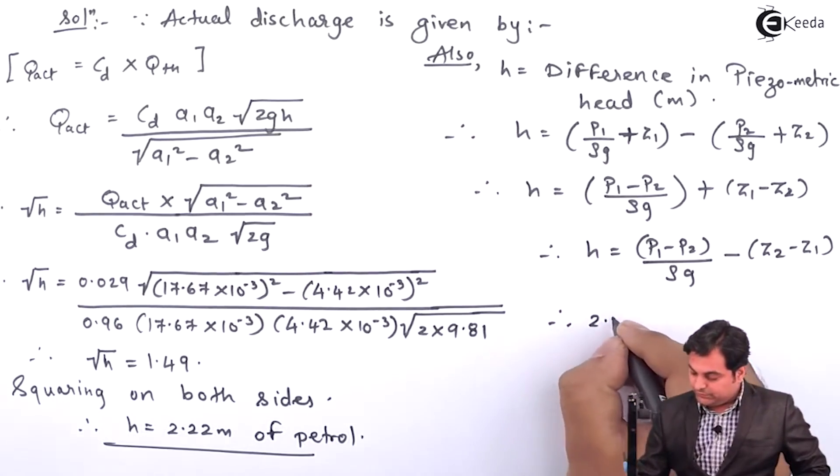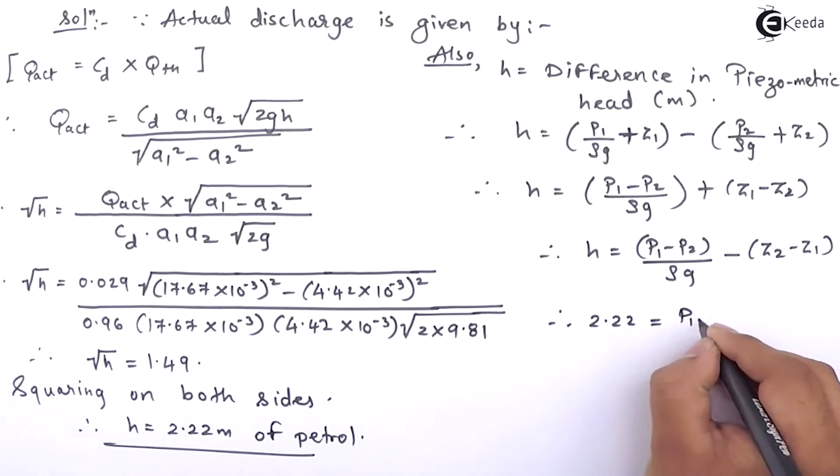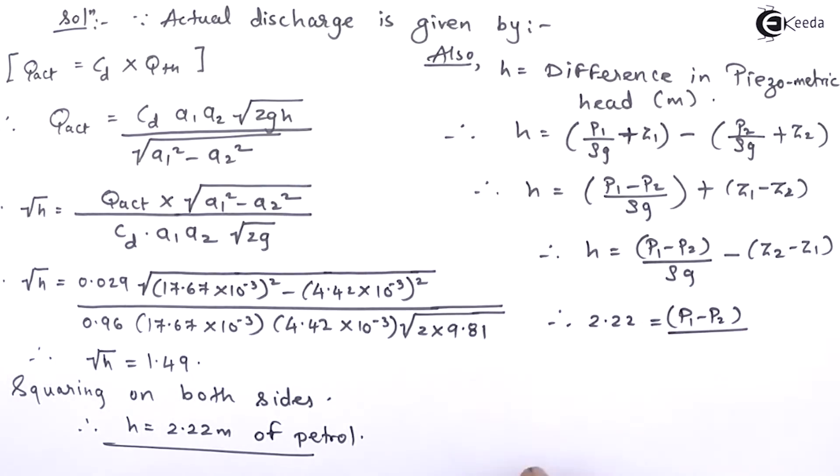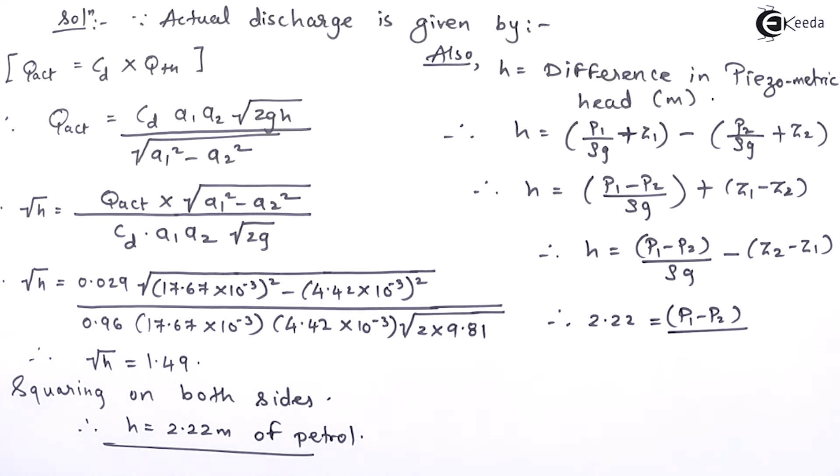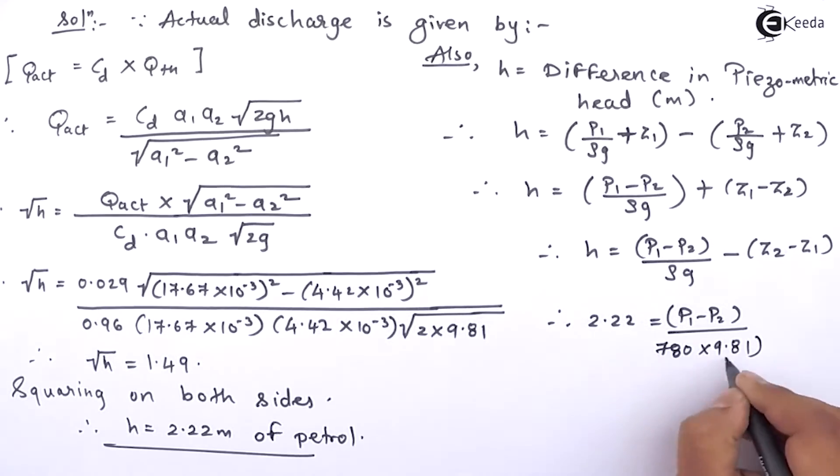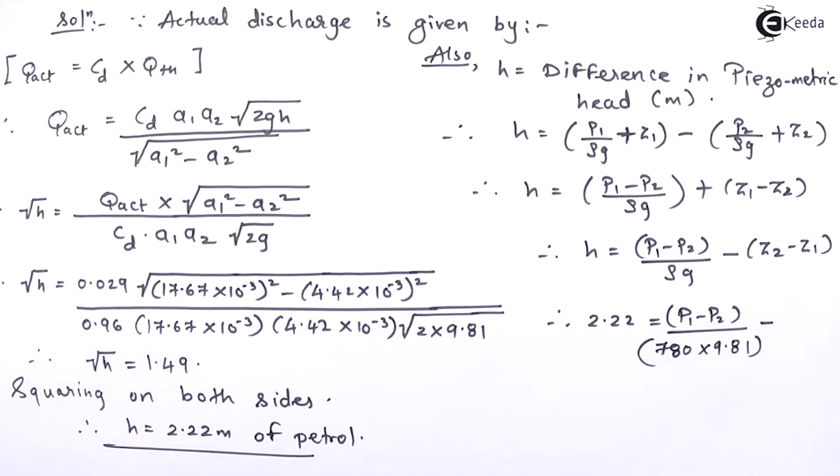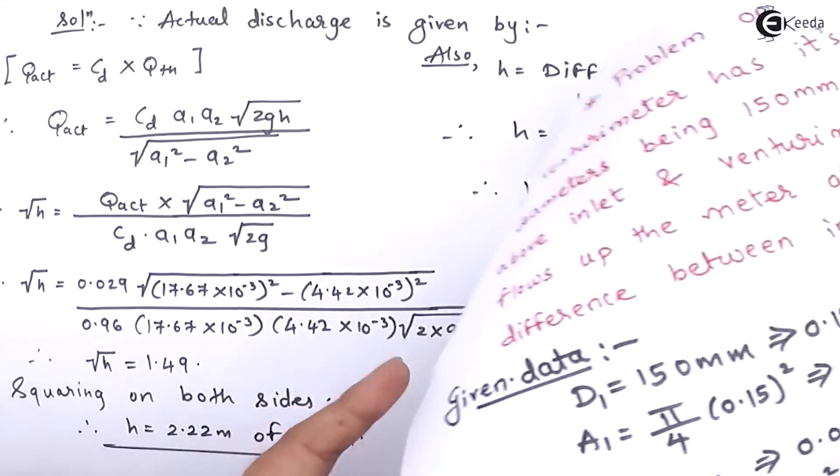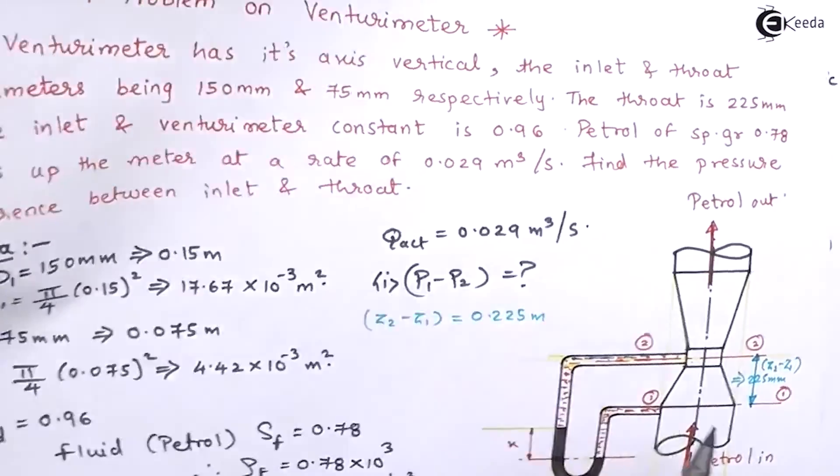Now, small h that is 2.22. P1 minus P2 is what we have to find out. Density of petrol that already I have calculated in the data, it is 780 into g which is 9.81. Z2 minus Z1 is 0.225 meter.